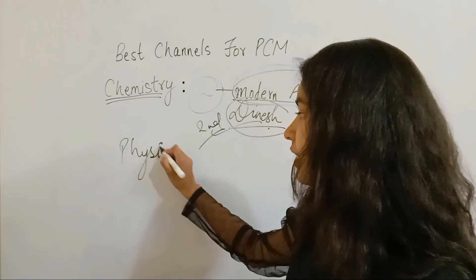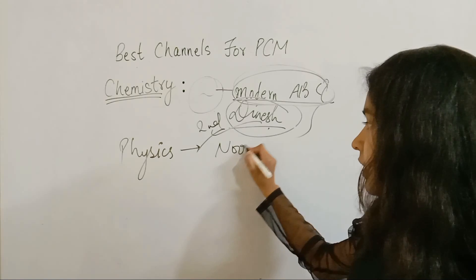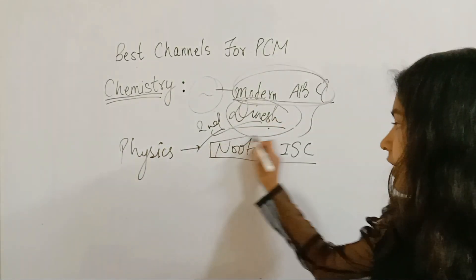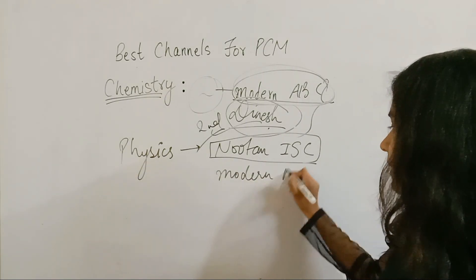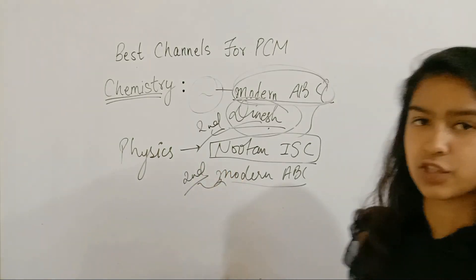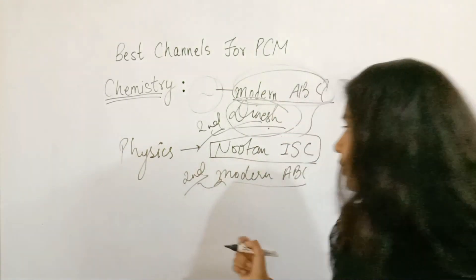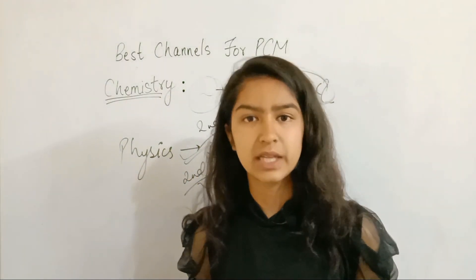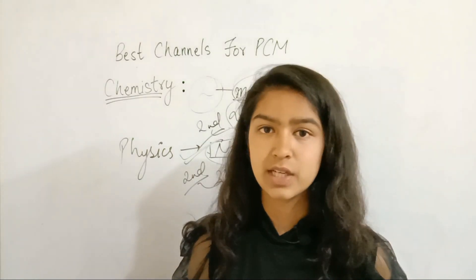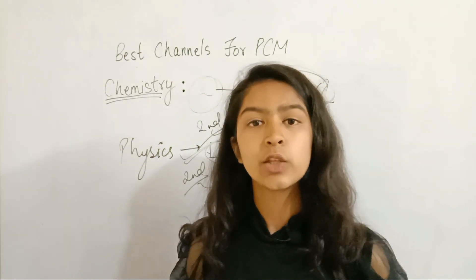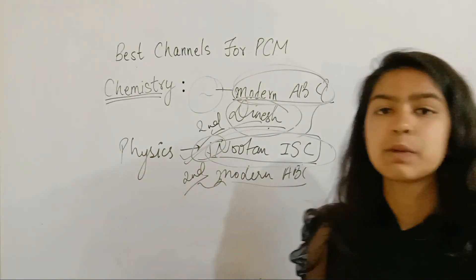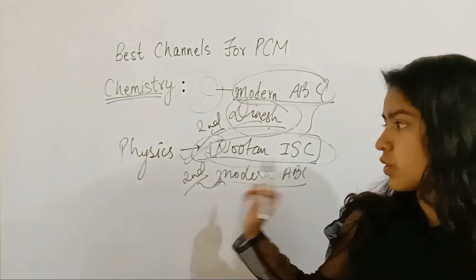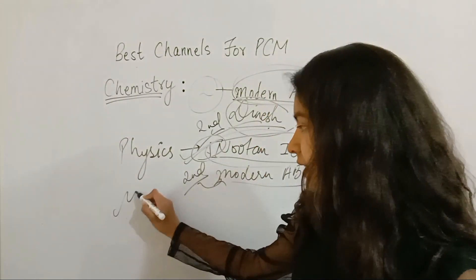Now for physics, I used two books. One was Newton — though it is for the ISE board, it is also quite helpful for CBSE and other boards. After that I used Modern ABC for the second part of physics. I preferred this book because all the derivations have been explained in a very good way, so I used both books.